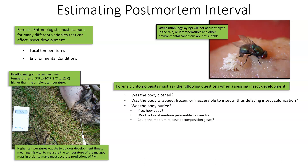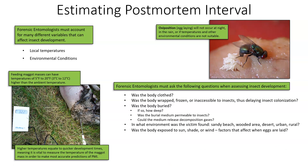In what environment was the victim found? Was it a sandy beach, a wooded area, a desert, urban, or rural? All of these can greatly impact the types of insects found in an area and therefore the types of insects that can colonize the body. Was the body exposed to sun, shade, or wind? These are all factors that will affect when the eggs are laid. Insects like flies will not lay their eggs in very windy areas. They will not lay their eggs where it's very dark, and most likely not in direct sunlight, as that is not conducive to rearing their young — shade would be ideal.